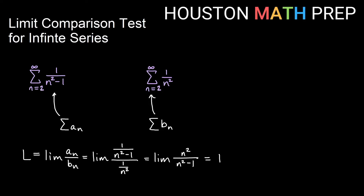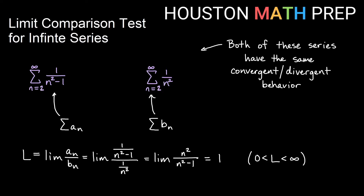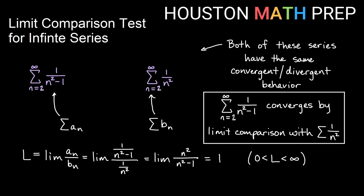Remember with this test: if the limit is a real number between zero and infinity, that means these are going to have the same overall behavior. So since the limit is some real number between zero and infinity, we know both series will have the same behavior. Since one over n squared is a p-series with p equals two, it converges, and so my original series also converges by limit comparison.